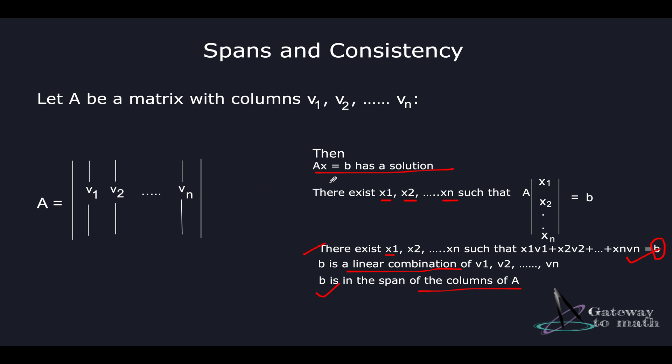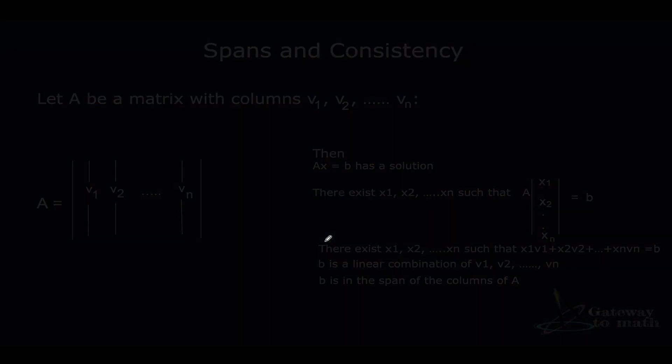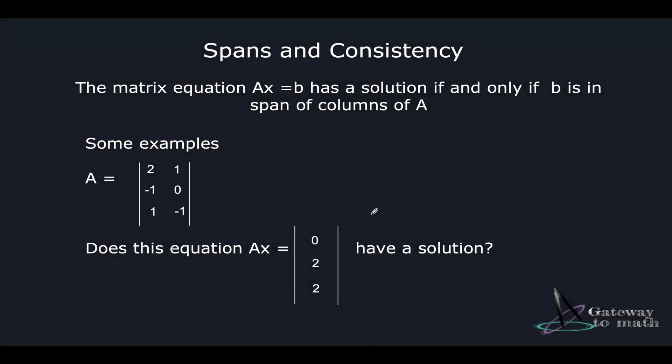So Ax = b has a solution when these conditions satisfy: first, A times x extended over the column vectors equals b; second, x1, x2, ..., xn such that when you add all of them together, this equals b. And then b is the linear combination of v1, v2, ..., vn.